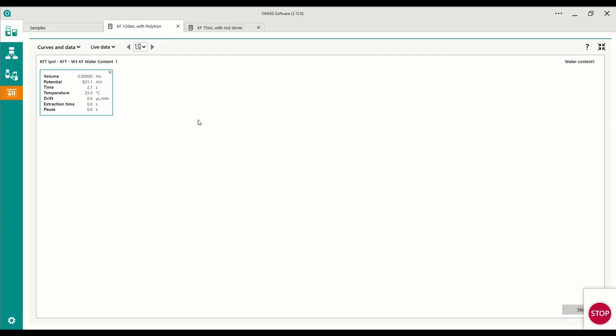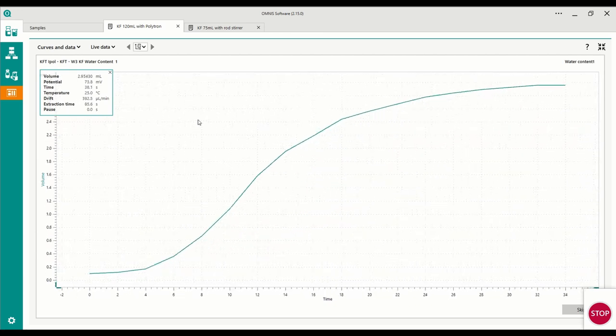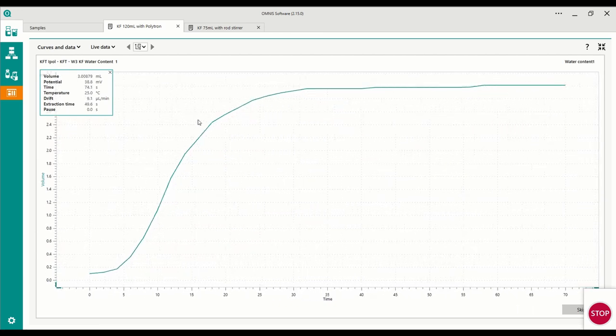After the homogenization, the titration starts automatically. Volumetric Carl Fischer titration with Omnis: fast, safe, and reliable.